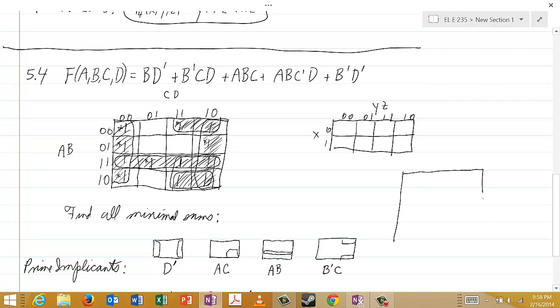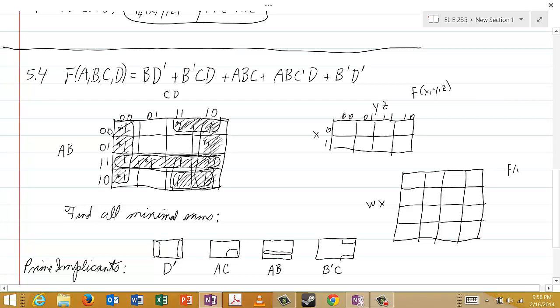But what about in a 4x4 Karnaugh map? This is going to appear in the problems for this lecture. So let's go ahead and talk about it now. Suppose we have a function of w, x, y, and z in that order. Since w and x are the first two variables, we put those on the vertical axis. Since y and z are the last two variables, we put those on the horizontal axis.